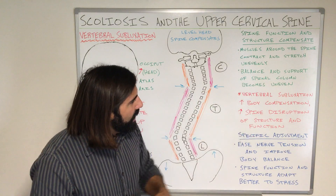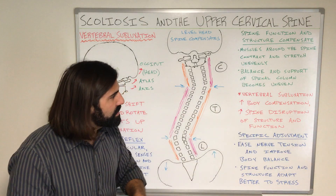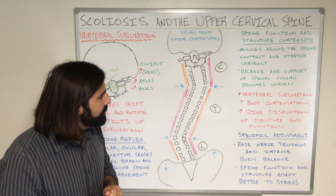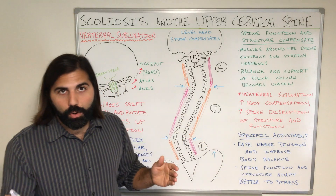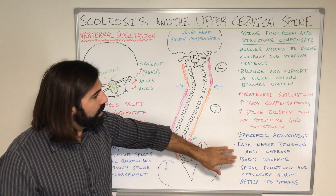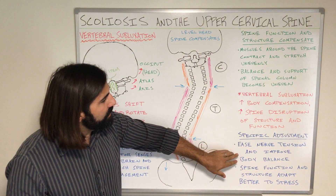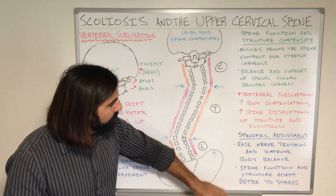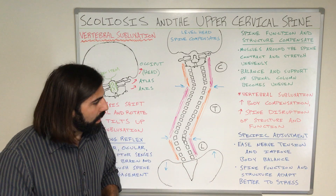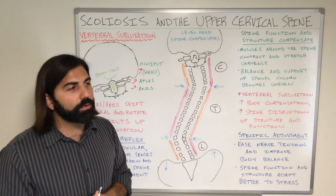When we have a vertebral subluxation, what's going to happen is we're going to increase our presentation of body compensations by creating more and more disruptions in the structure and function of our spinal column. The goal of chiropractic is not to try to straighten spines. Our main objective is to help improve the integrity of our spinal column by easing tension off the nerves and improving overall body balance. When we do that, we increase the spinal function and structure of our spine so our body can better adapt to the stresses that are going to bombard our system.